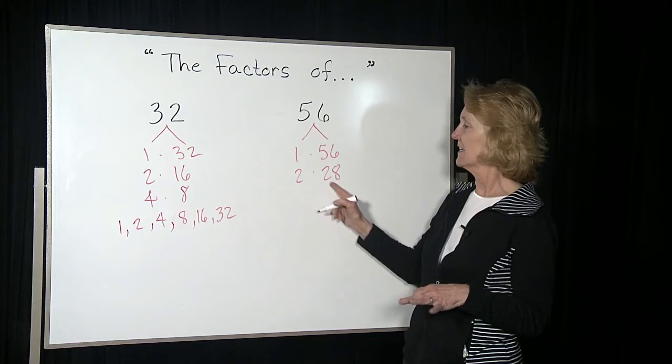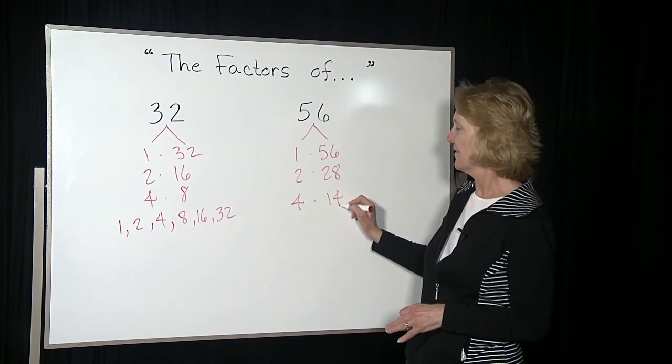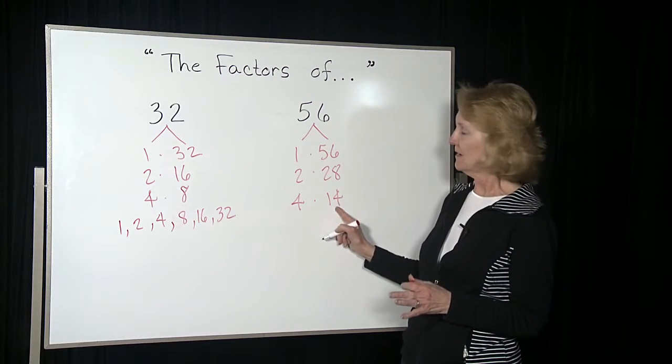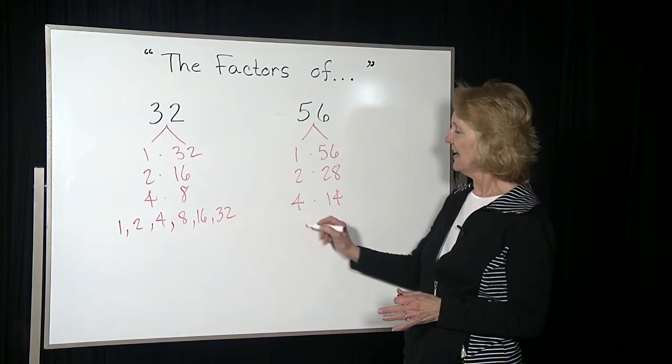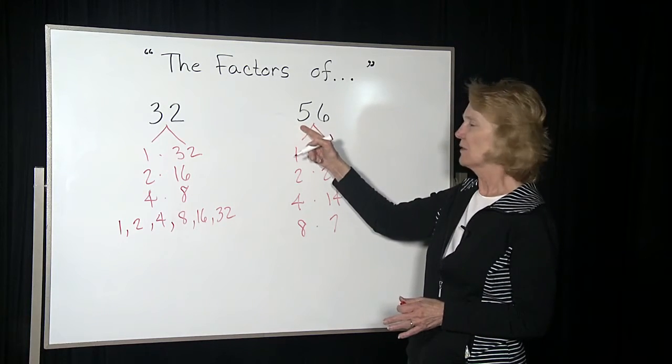That's still even, so I can cut it in half. Double this one, and cut this one in half. That's still even, so I can double this one, and cut that in half. I get 8 times 7.